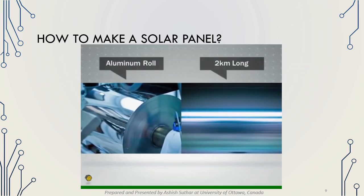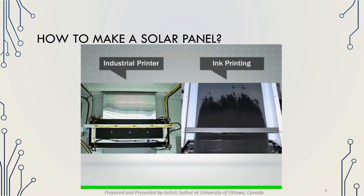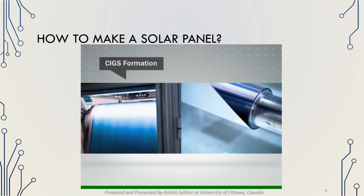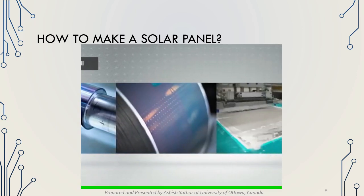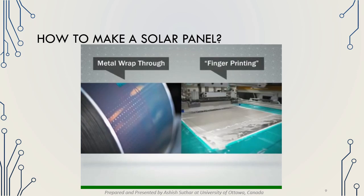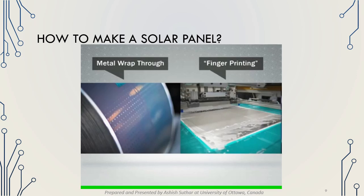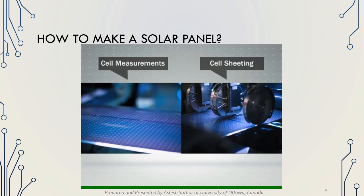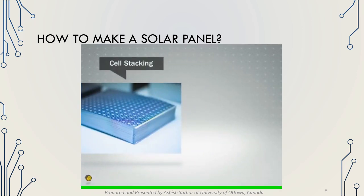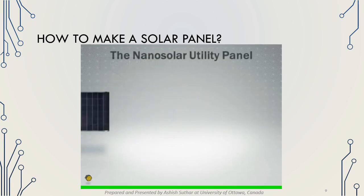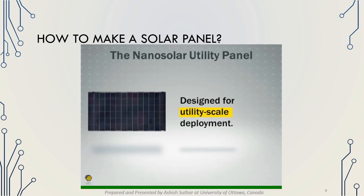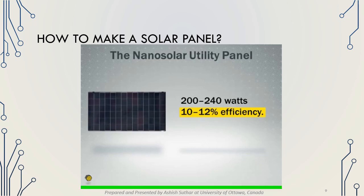The manufacturing process starts with a 2km long roll of aluminum. An inkjet printer is used to print on this unrolled sheet, which transforms into zigzag form. Metal is then wrapped for conductivity, and the semiconductor fingerprint is processed. Sheets are cut individually as per requirements, and cells are combined together to make a panel. The heart of any solar panel is the utility panel, designed at utility scale to operate at 1500 volts for high-voltage power plants, with efficiency of about 10 to 12% and a lifespan of 25 years.